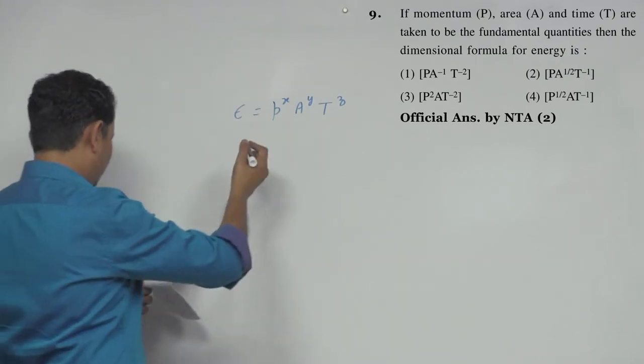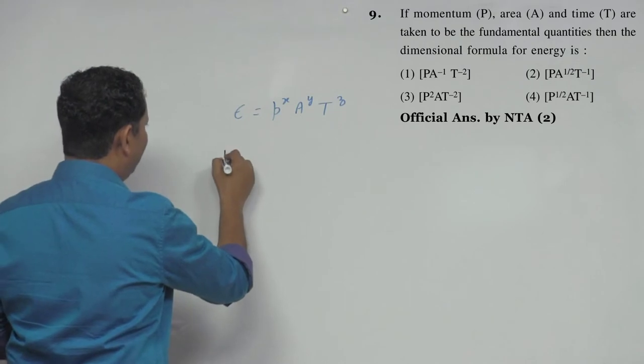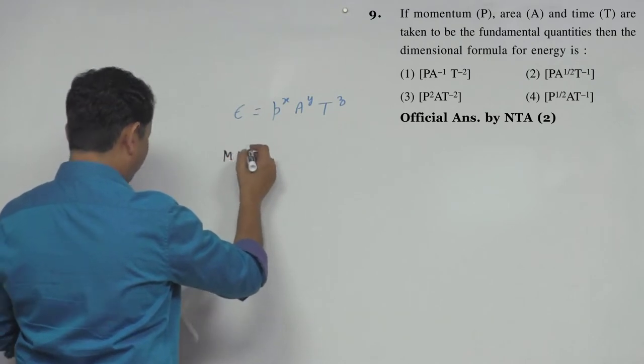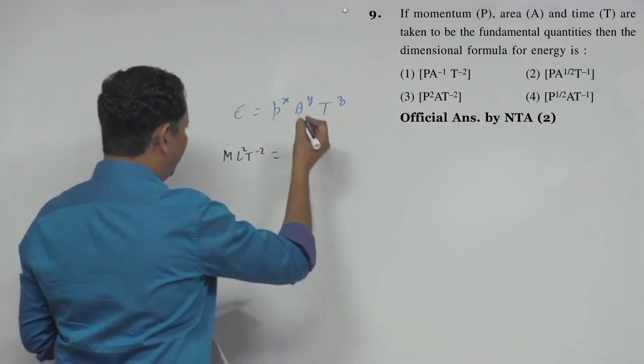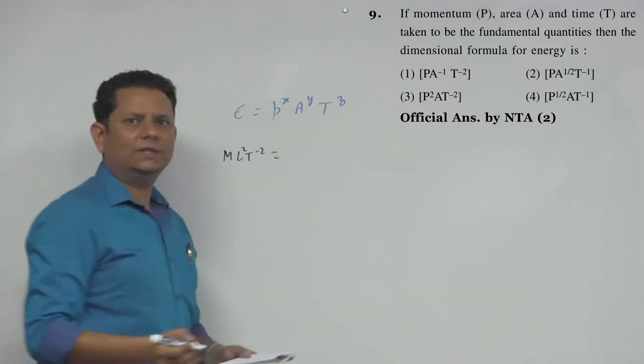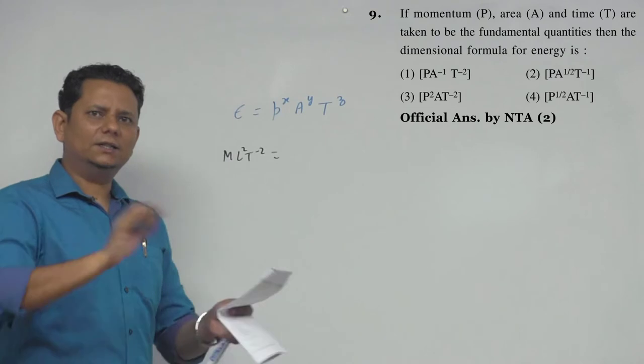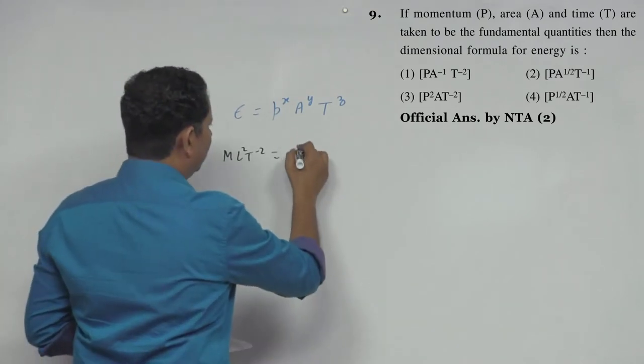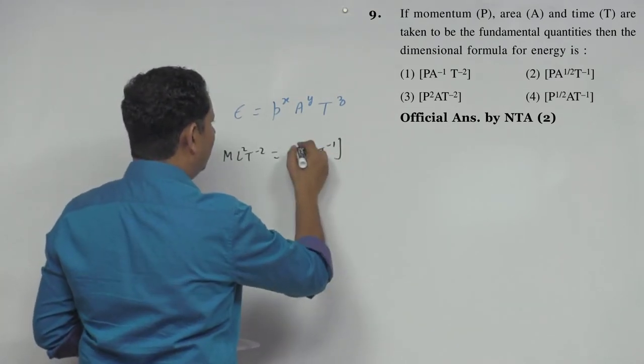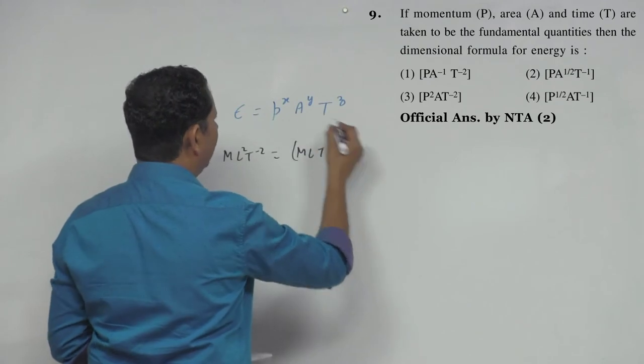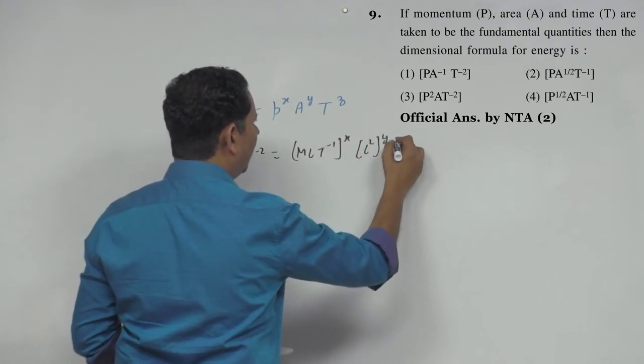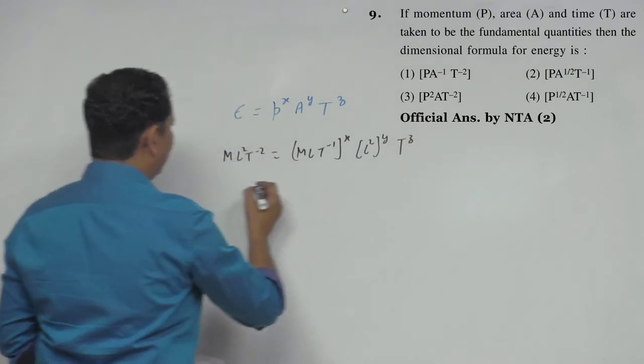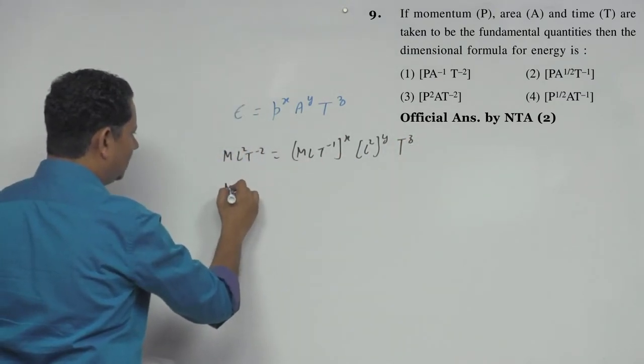So this will be MLT minus 1 to the power X, A is L square to the power Y, and T to the power Z. So left hand side, right hand side dimensions should be equal.